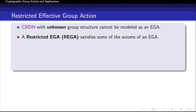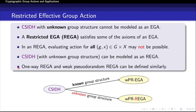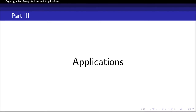Going back to CSIDH, there is a variant of this assumption in which the group structure is not known, and hence this variant cannot be modeled as an effective group action. To overcome this issue, we introduce another abstraction called restricted effective group action, or REGA, which satisfies some of the axioms of an EGA. As an instance, evaluating the action may not be possible for any given pair g and x. The main takeaway is that there are basically two variants of CSIDH: one with known group structure, which plausibly implies a weak pseudorandom EGA, and one with unknown group structure, which plausibly implies a weak pseudorandom restricted EGA. Hereafter, I will focus on applications of EGA.